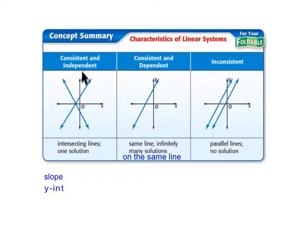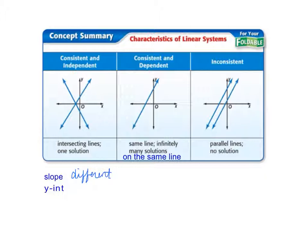So if you had two equations that were consistent and independent, they would have different slopes, and the y-intercept could be either the same or different — that doesn't matter. But the slopes will be different.